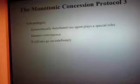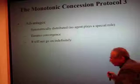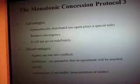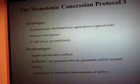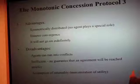Advantages of the monotonic concession protocol: it is symmetrically distributed with no special role for any particular agent. It ensures convergence — it doesn't ensure a deal, but it ensures convergence, and it will finish because it will not go on indefinitely; something happens by accepting a deal or reaching a conflict. The downside is that agents can run into conflict, making it inefficient as negotiation can be quite long. It also assumes agent rationality — that each agent maximizes its utility — which is not always true in real negotiation.